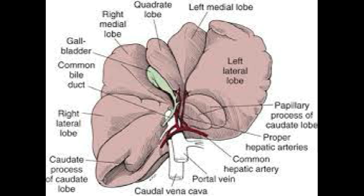The left hepatic lobe in canines is further divided into two parts: left lateral hepatic lobe and left medial hepatic lobe. Similarly, the right hepatic lobe of the dog is also further divided into right medial hepatic lobe and right lateral hepatic lobe. The caudate hepatic lobe of dog is further divided into caudate process and papillary process.